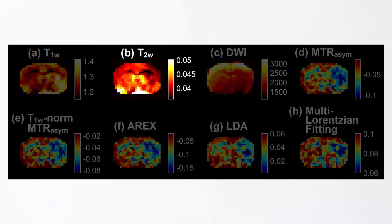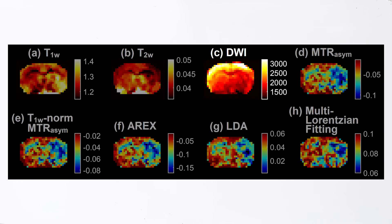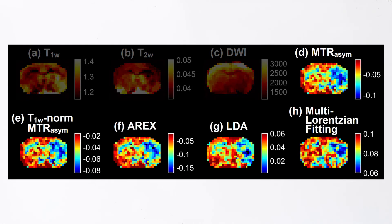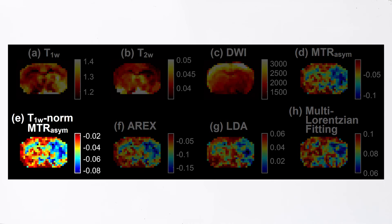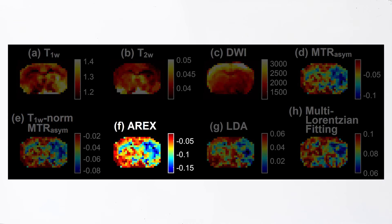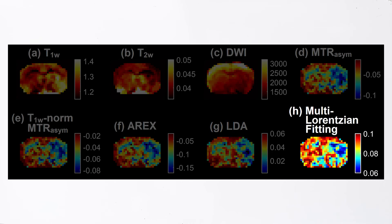This figure shows the MR images of a middle cerebral artery occlusion ischemic stroke model in a male Sprague Dawley rat. The images were acquired using a 9.4 Tesla field strength scanner. The first three images are the conventional MR images, that is, the T1W and T2W-weighted images, as well as the diffusion-weighted image. The subsequent images are APT images that were generated using some of the previously discussed quantification methods, including MTR asymmetry, T1W-normalized MTR asymmetry, apparent exchange-dependent relaxation, Lorentzian difference analysis, and multi-Lorentzian fitting.